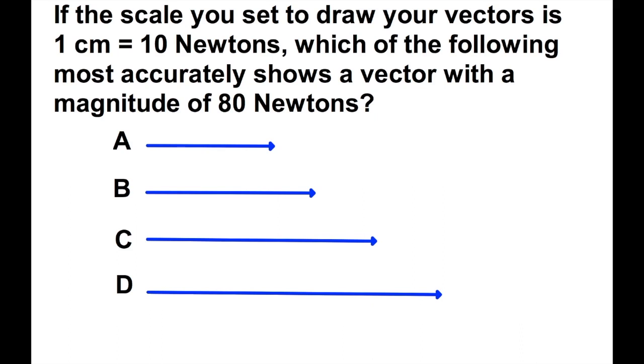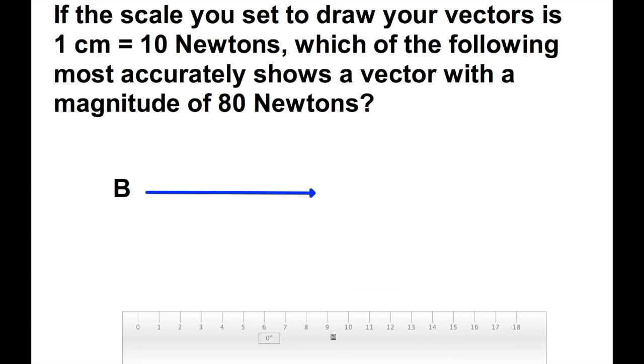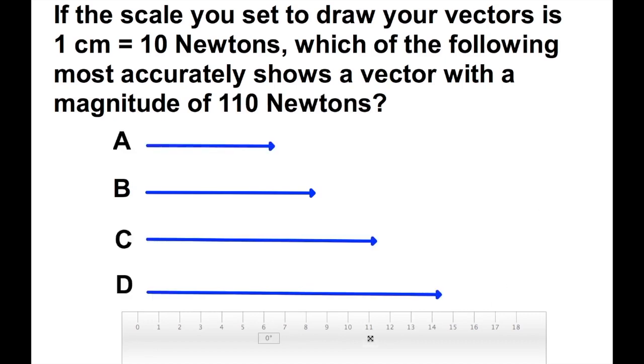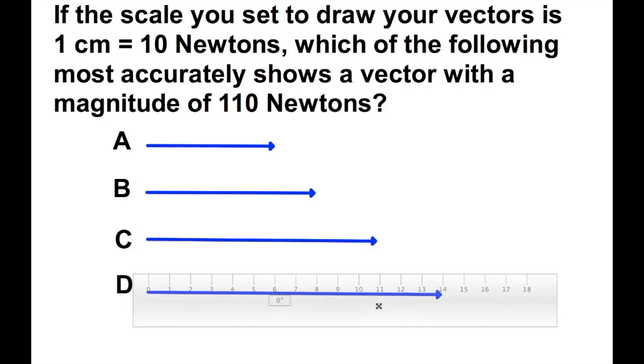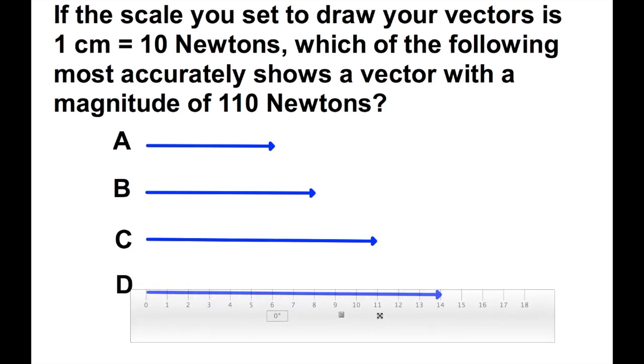Look at this here. If we're trying to figure out which of these would be 80 Newtons and we have a scale of 1 centimeter equals 10 Newtons, which is the correct answer? That would be B because B is 8 centimeters. Which of these would be 110 Newtons? You can see C is 11 centimeters and D is 14. Looking at our scale, the answer would be C.